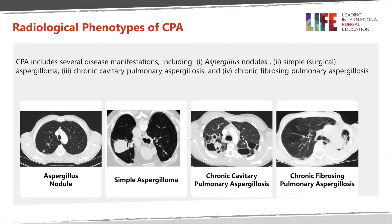Finally, on the left, we have the end stage of severe CCPA: chronic fibrosing pulmonary aspergillosis. This is an outcome where most or all of a patient's lung has been entirely destroyed due to the reaction to aspergillus, leaving cavities which may have fungal material inside them.